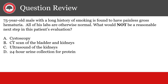Let's do some questions to help you prepare for the exam this week. A 75-year-old male with a long history of smoking is found to have painless gross hematuria. All of his labs are otherwise normal. What would not be a reasonable next step in this patient's evaluation? The answer is urine protein collection. The patient has blood in his urine from something bleeding in the urinary system - this would not be useful. We use the urine protein collection to assess for nephropathy. This patient likely has a bladder or kidney cancer.